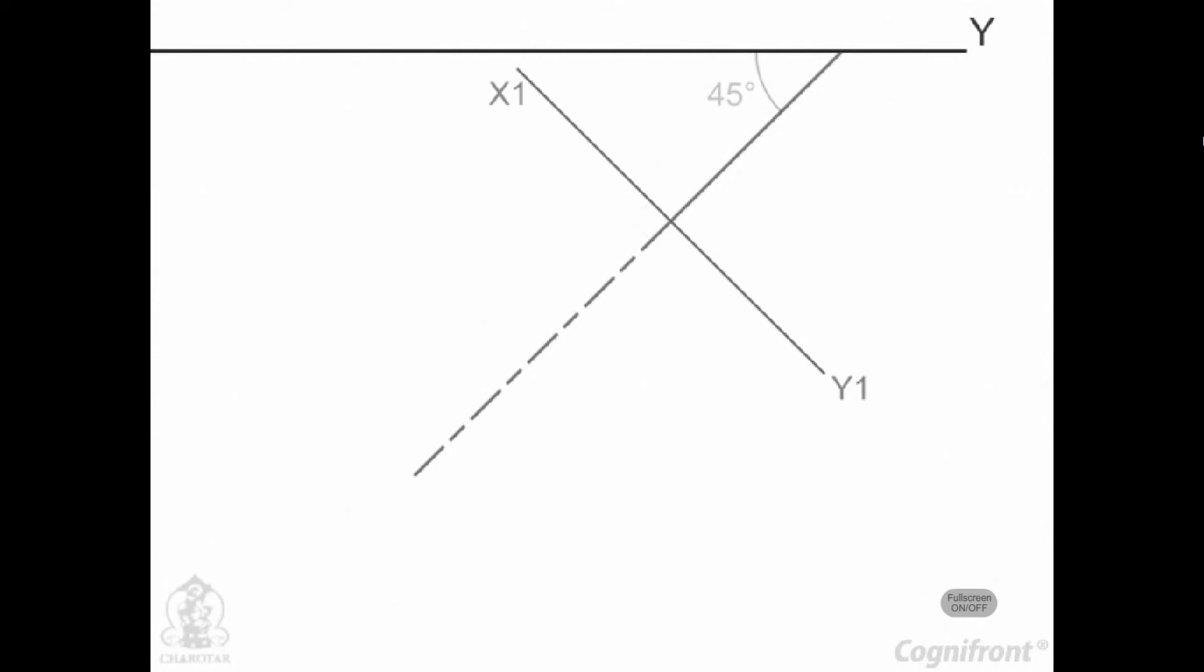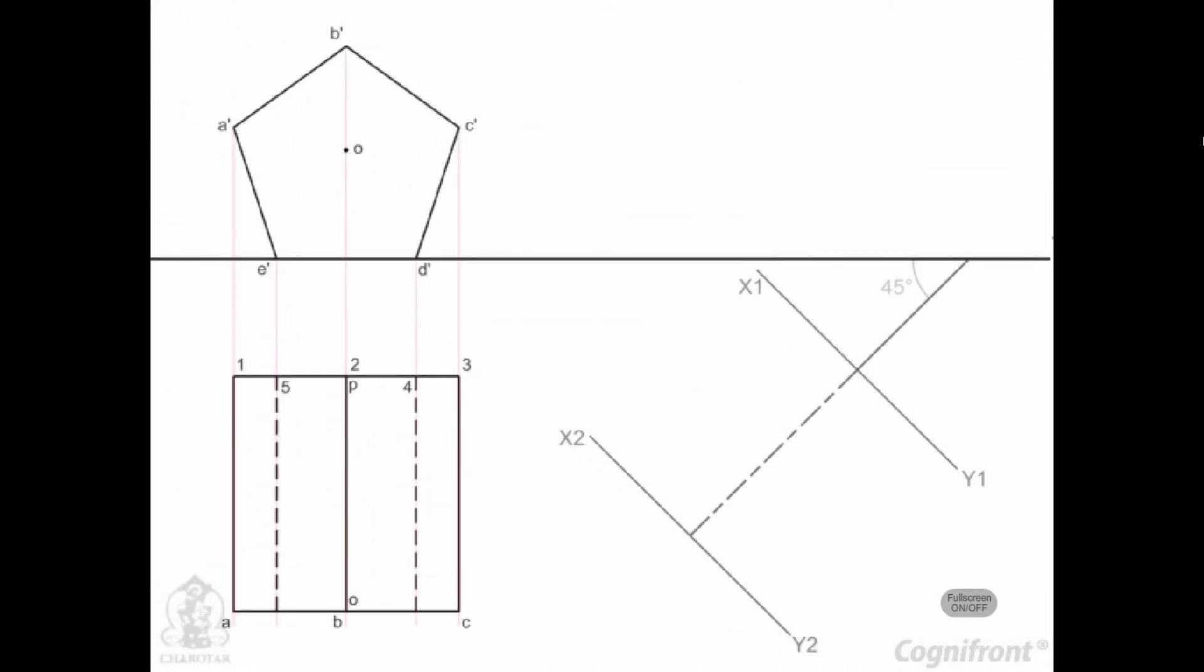Next we shall draw a line x2, y2 parallel to x1, y1 at a distance of 50 mm. Use a divider to measure the distances of the corner points from the existing top view and mark them respectively in this new inclined top view.